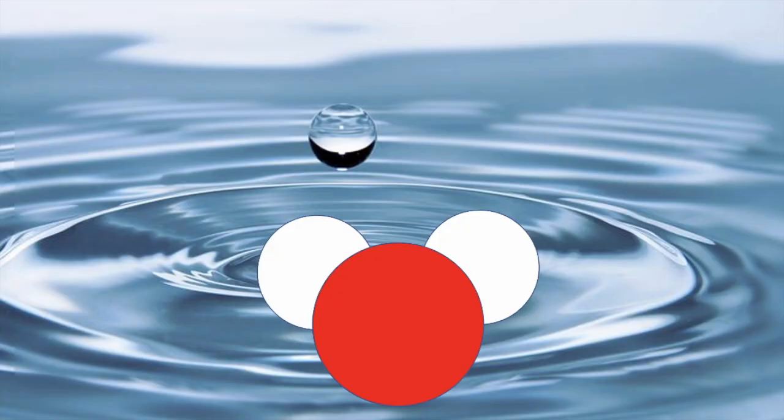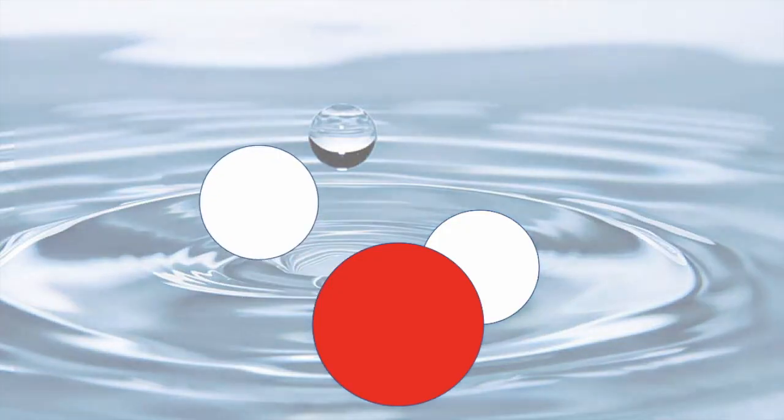The only way you can separate a compound into its atoms is through a chemical reaction. However, if you break a compound up, you will change the identity of the substance into something else. For example, if you break up water using a chemical reaction, you will end up with hydrogen gas and oxygen gas, and these are not water.